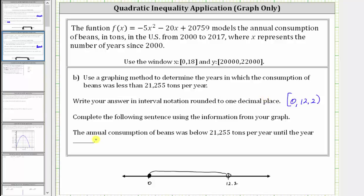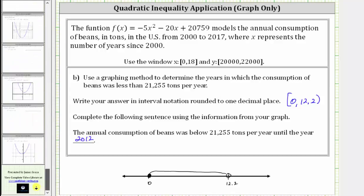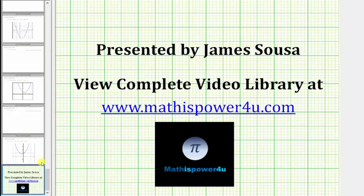To complete the sentence: the annual consumption of beans was below 21,255 tons per year until the year what? X equals 12 represents the beginning of the year 2012, and x equals 13 represents the beginning of the year 2013. Because we have 12.2, it's going to be sometime in the year 2012. Therefore, we enter 2012. I hope you found this helpful.